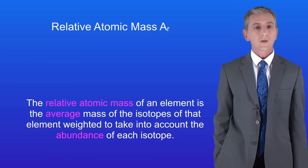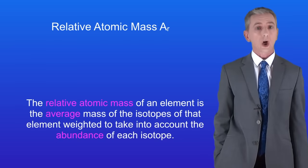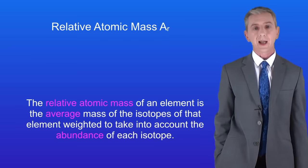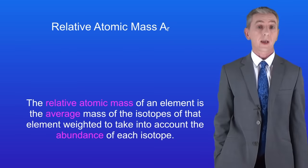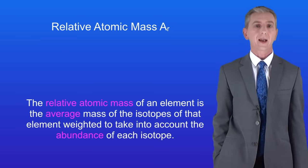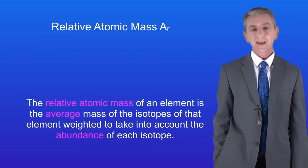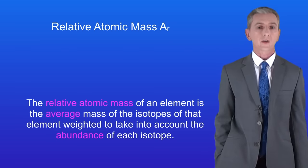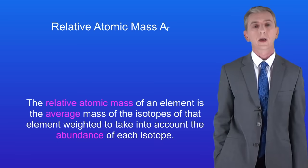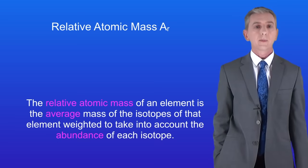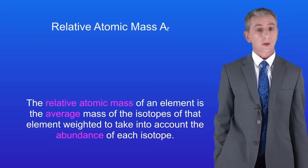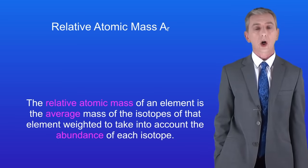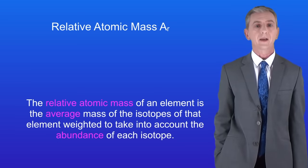We've already seen that the relative atomic mass of an element is the average mass of the isotopes of that element, weighted to take into account the abundance of each isotope. Remember that the word abundance tells us how common an isotope is.